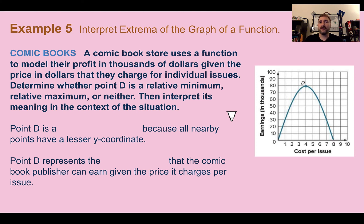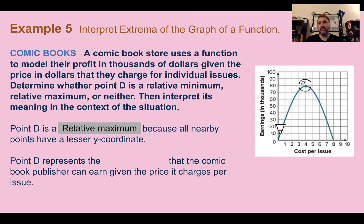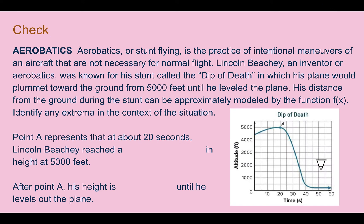Example 5: Interpret extrema of the graph of a function. Our real-world context is comic books. A comic book store uses a function to model their profit in thousands of dollars, given the price in dollars they charge for individual issues. Determine whether point D is a relative minimum, relative maximum, or neither, then interpret its meaning in context. First, D is at the top of the hill, meaning it's a relative maximum — every point around it has a lesser y-coordinate. It's representing the greatest profit: the store earns about $80,000 for greatest profit, based on how much it's charging per issue.